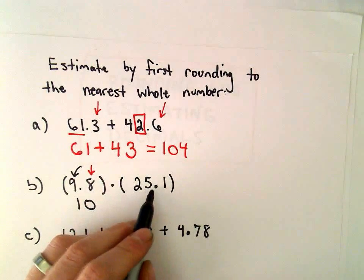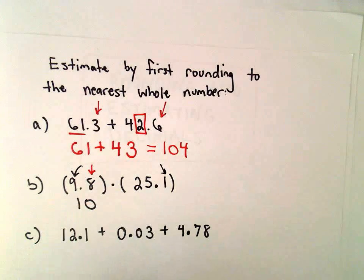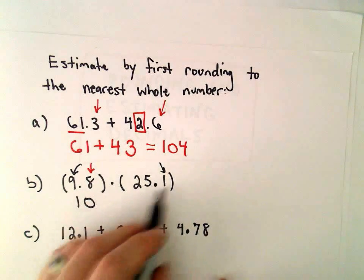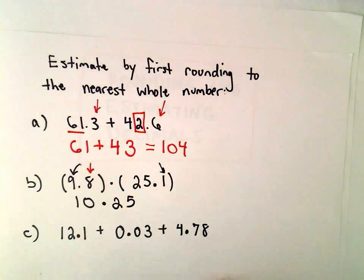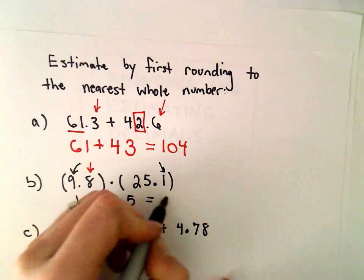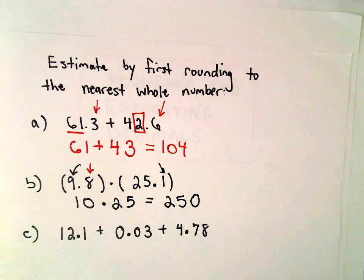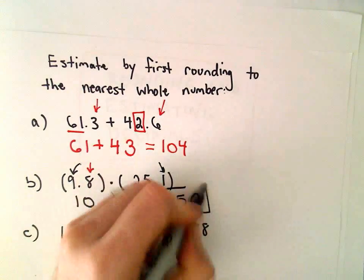So instead of 9, we'll have 10. If we round 25.1, well, 1 is 4 or smaller, so we'll round 25.1 to 25. And 10 times 25, we just basically tack on a 0.